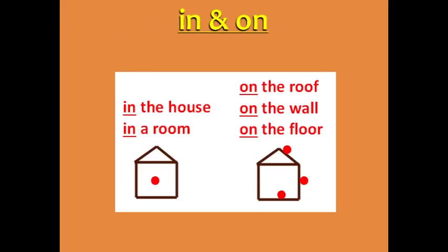Something can be in the house or in a room — house and room are enclosed spaces. But we say on the roof, on the wall, or on the floor, because roof, wall, and floor are all surfaces.